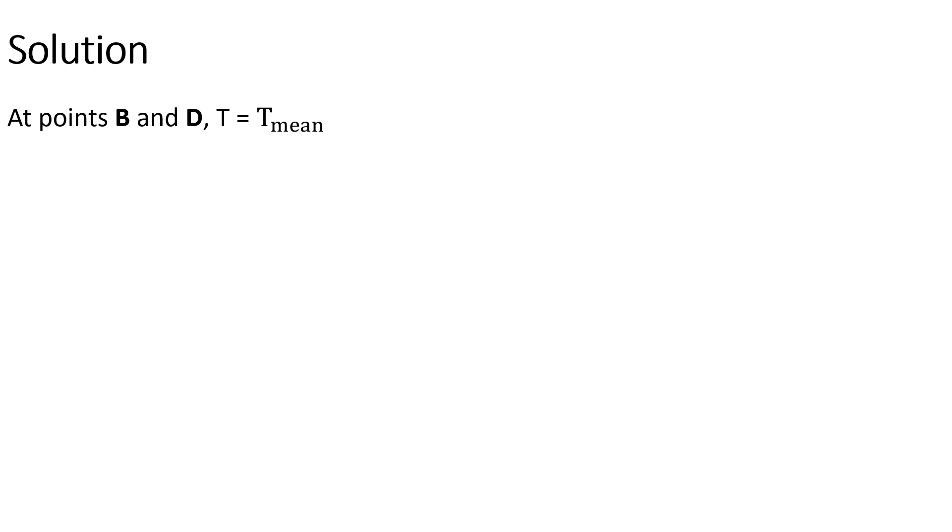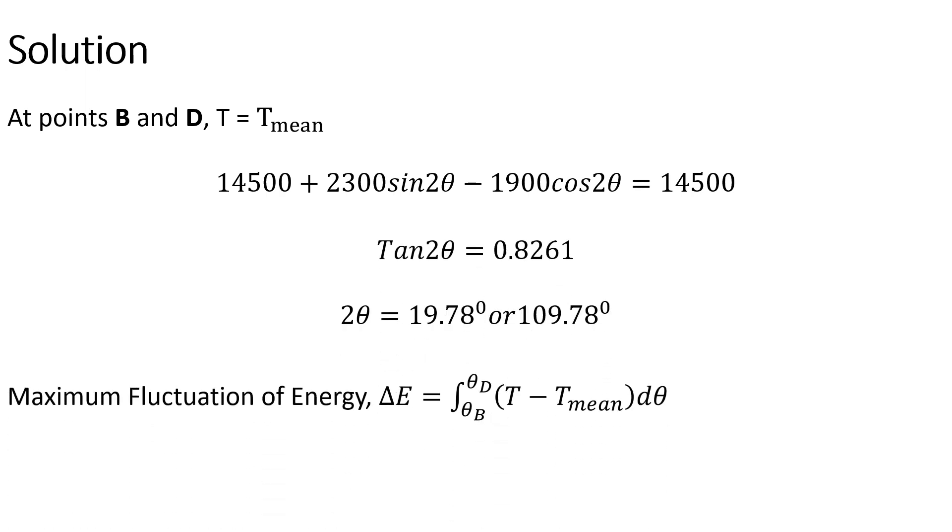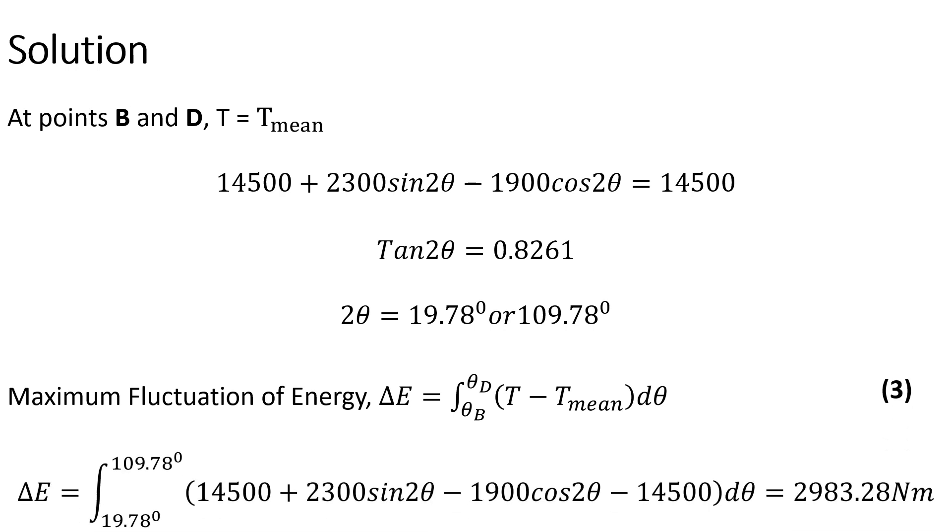At points B and D, torque equals the mean resisting torque, and we equate the two to get the value of theta at points B and D. We can now calculate the maximum fluctuation of energy at BCD which is given by equation 3. When we plug in the values, we get the fluctuation of energy equal to 2983.28 newton meter.